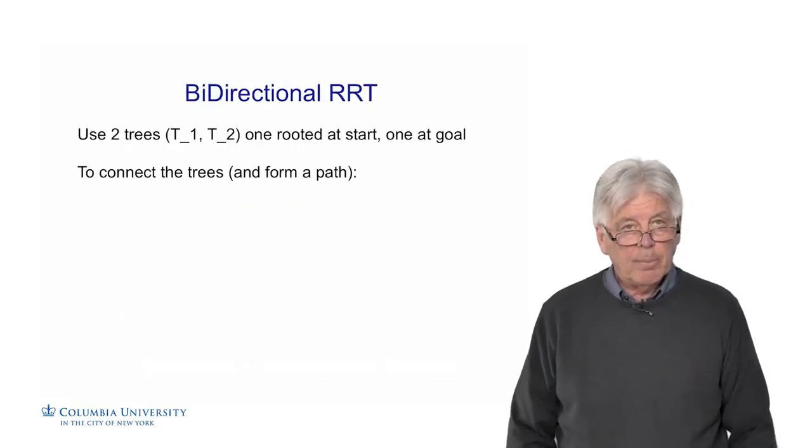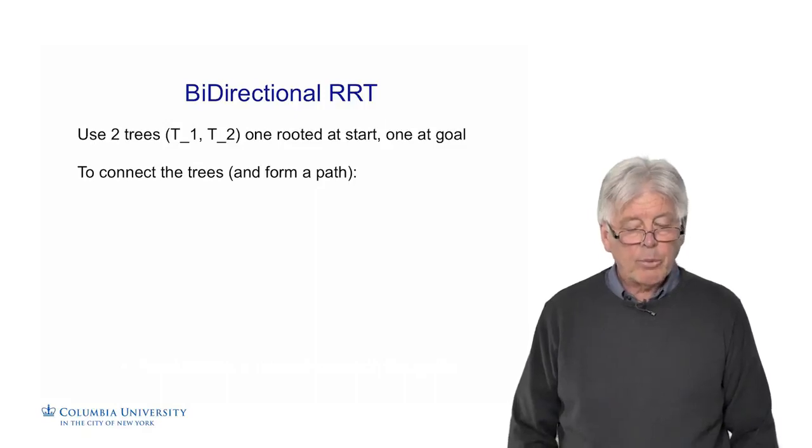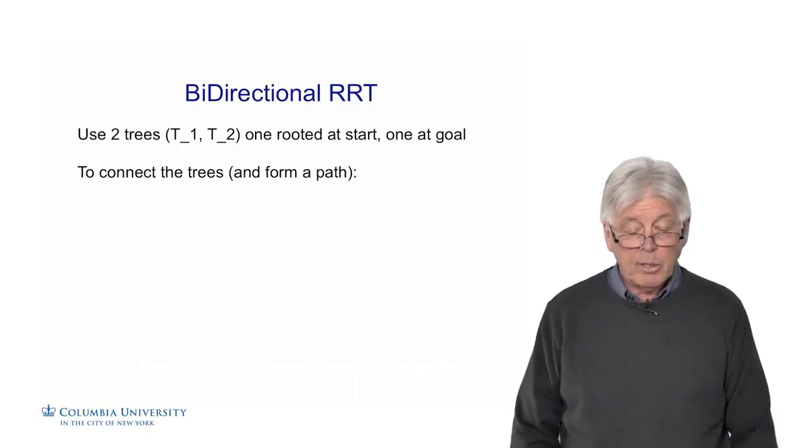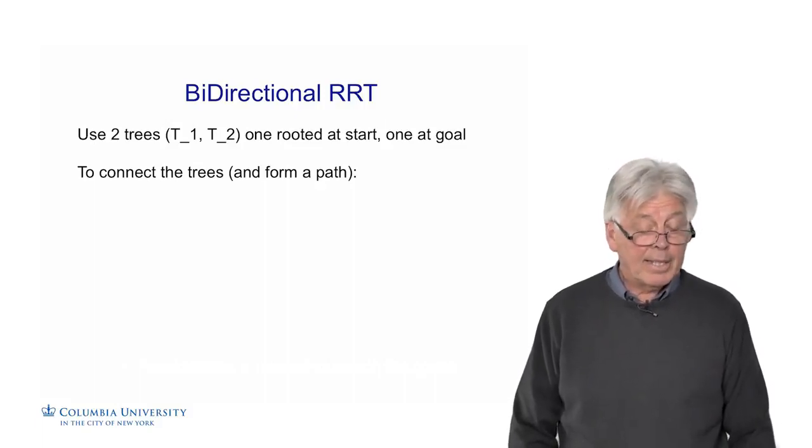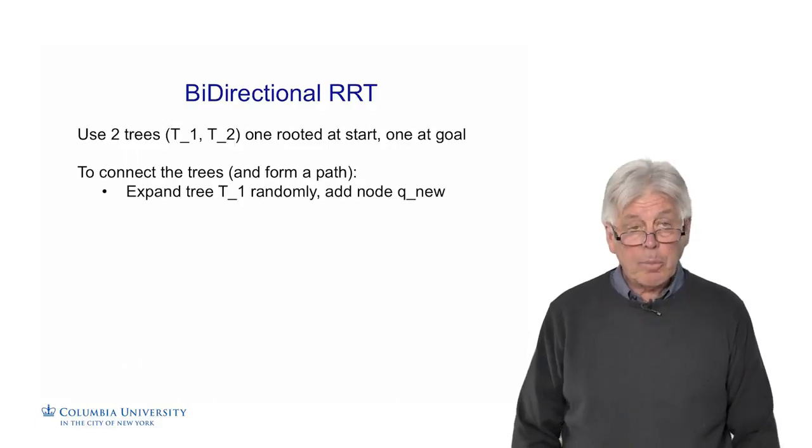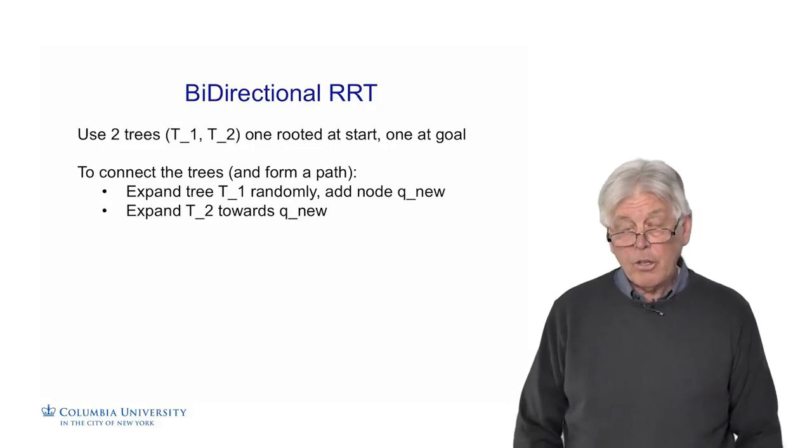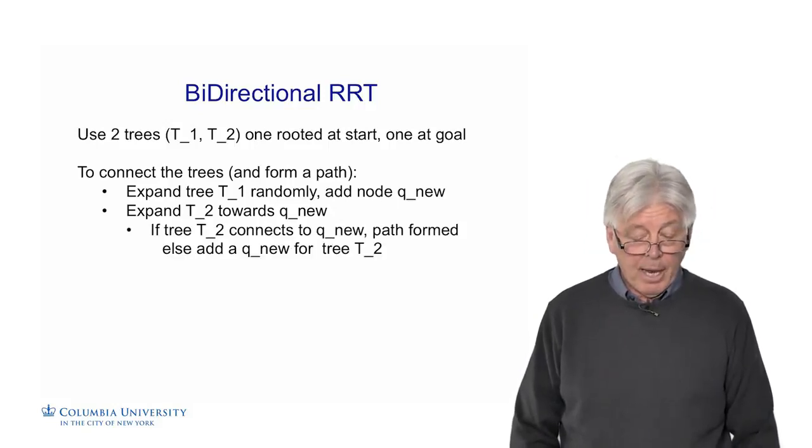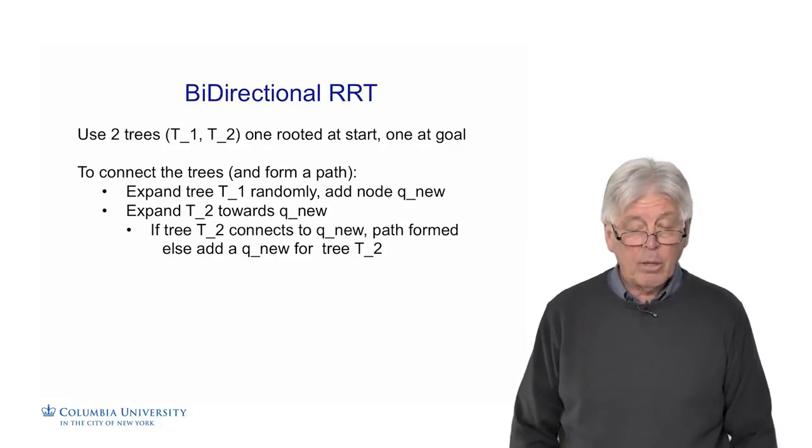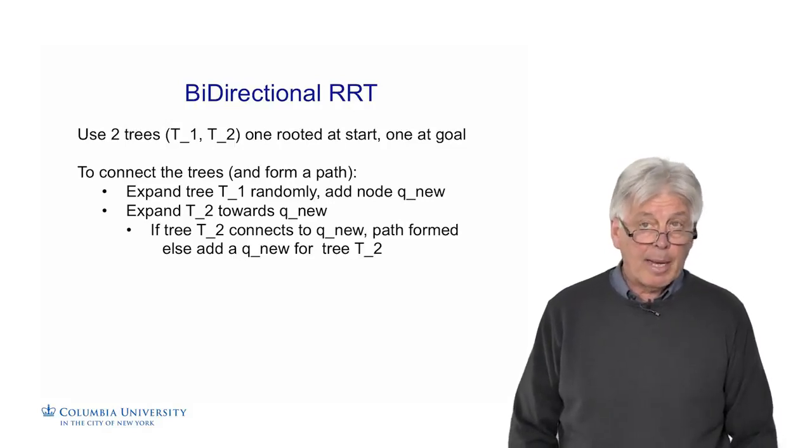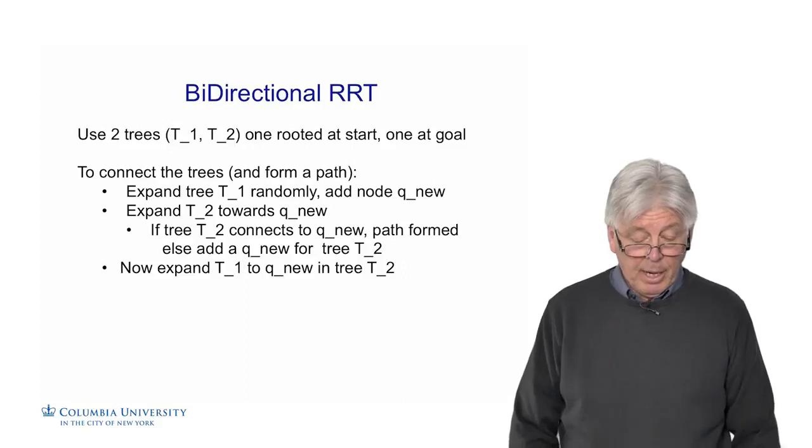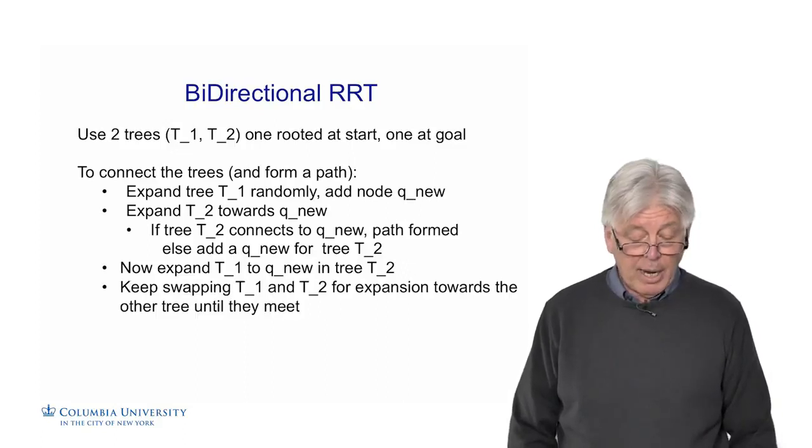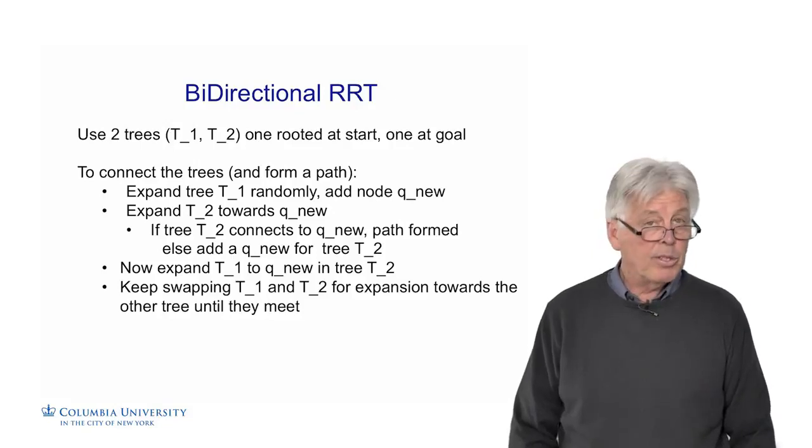There's another way we can do finding a goal: a bidirectional RRT. We'll use two trees, T1 and T2, one rooted at the start and one at the goal. To connect the trees and form a path, we'll expand T1 randomly, adding a new node QNU. We'll expand T2 towards QNU. Every time we get a new node from one tree, we use that as the goal for the other tree. If tree T2 connects to the QNU from tree T1, the path is formed. Otherwise we'll add a QNU for tree T2, which is out of step size towards QNU. We keep swapping T1 and T2 for expansion towards the other tree until they meet.